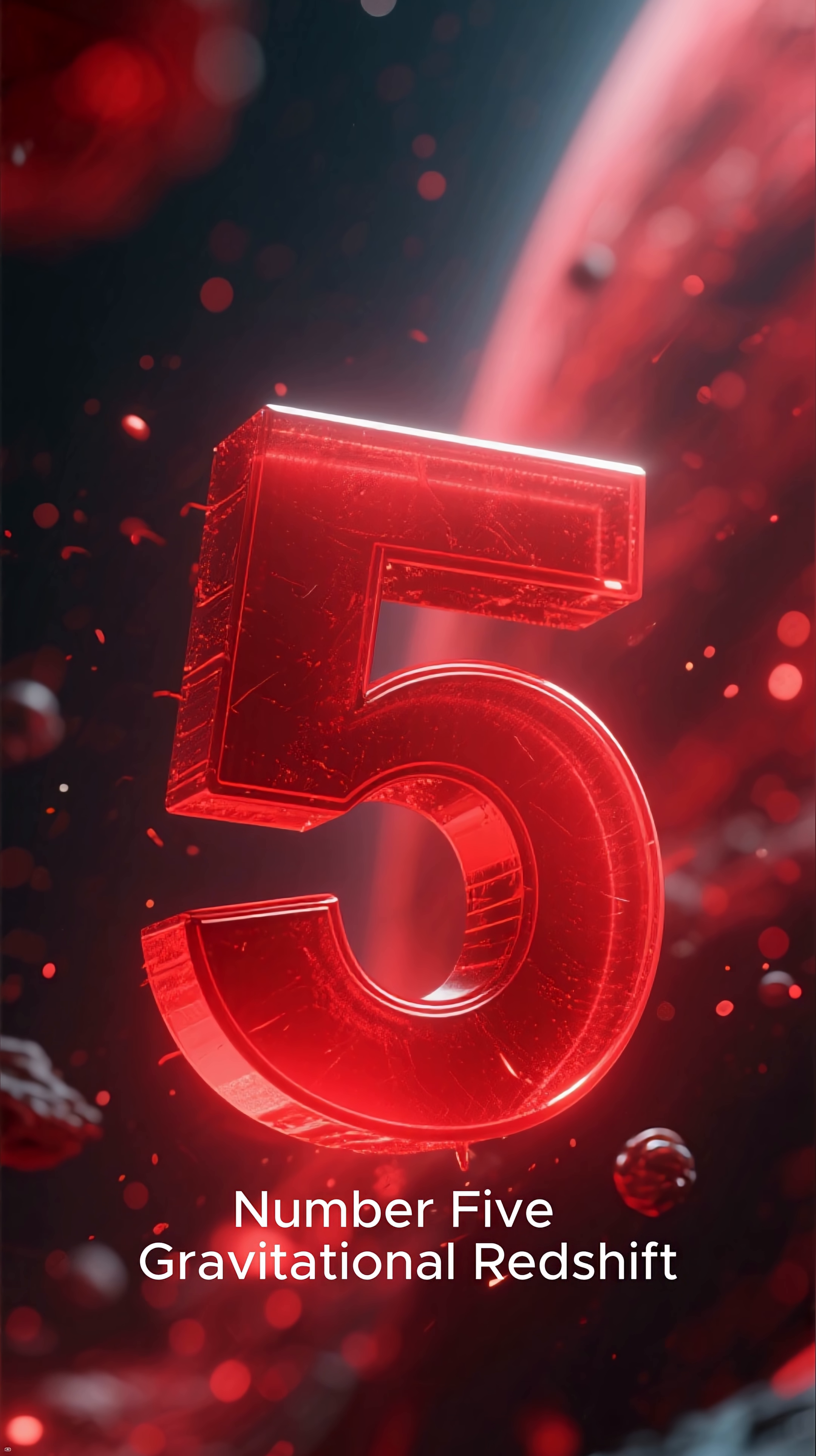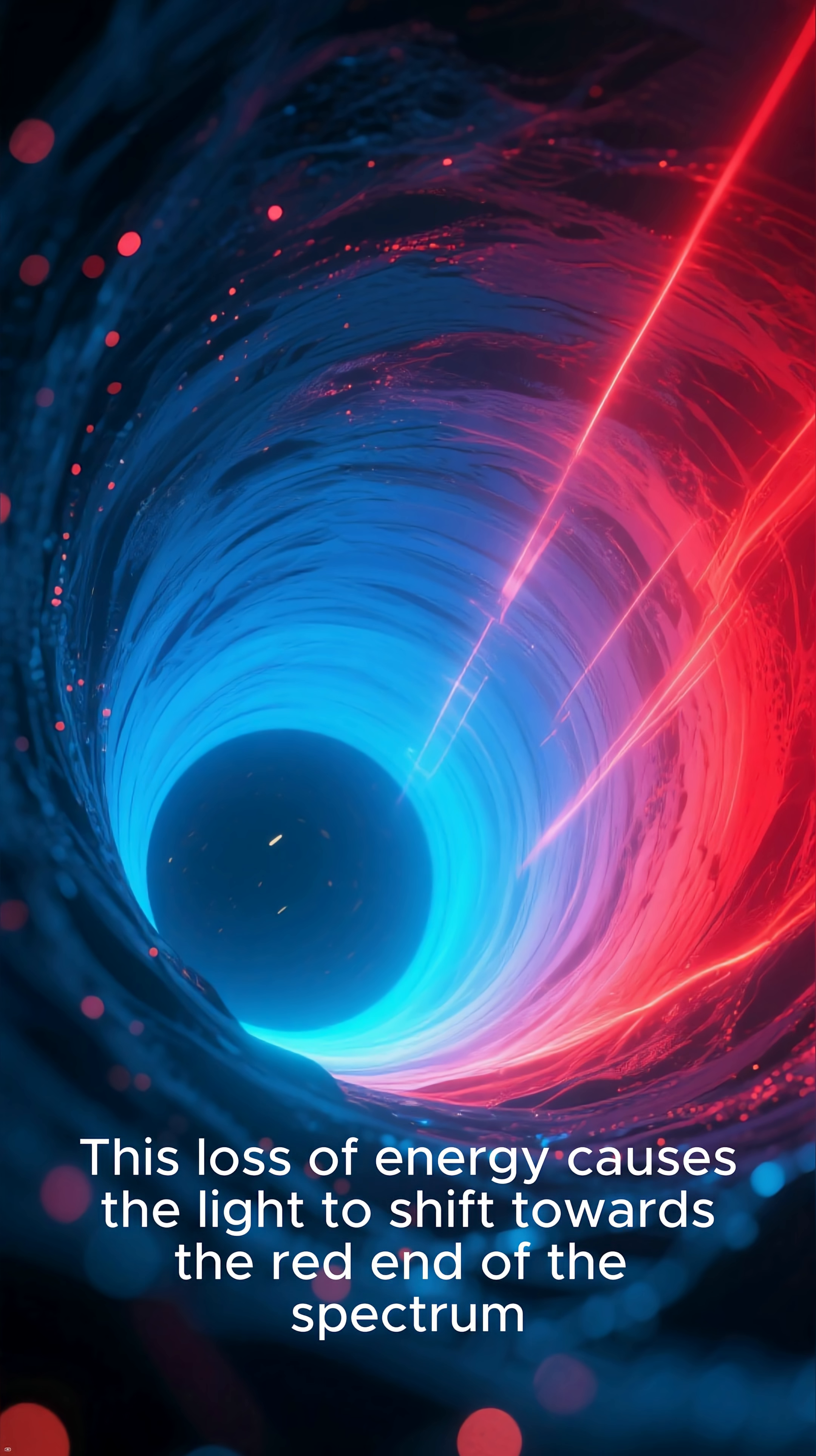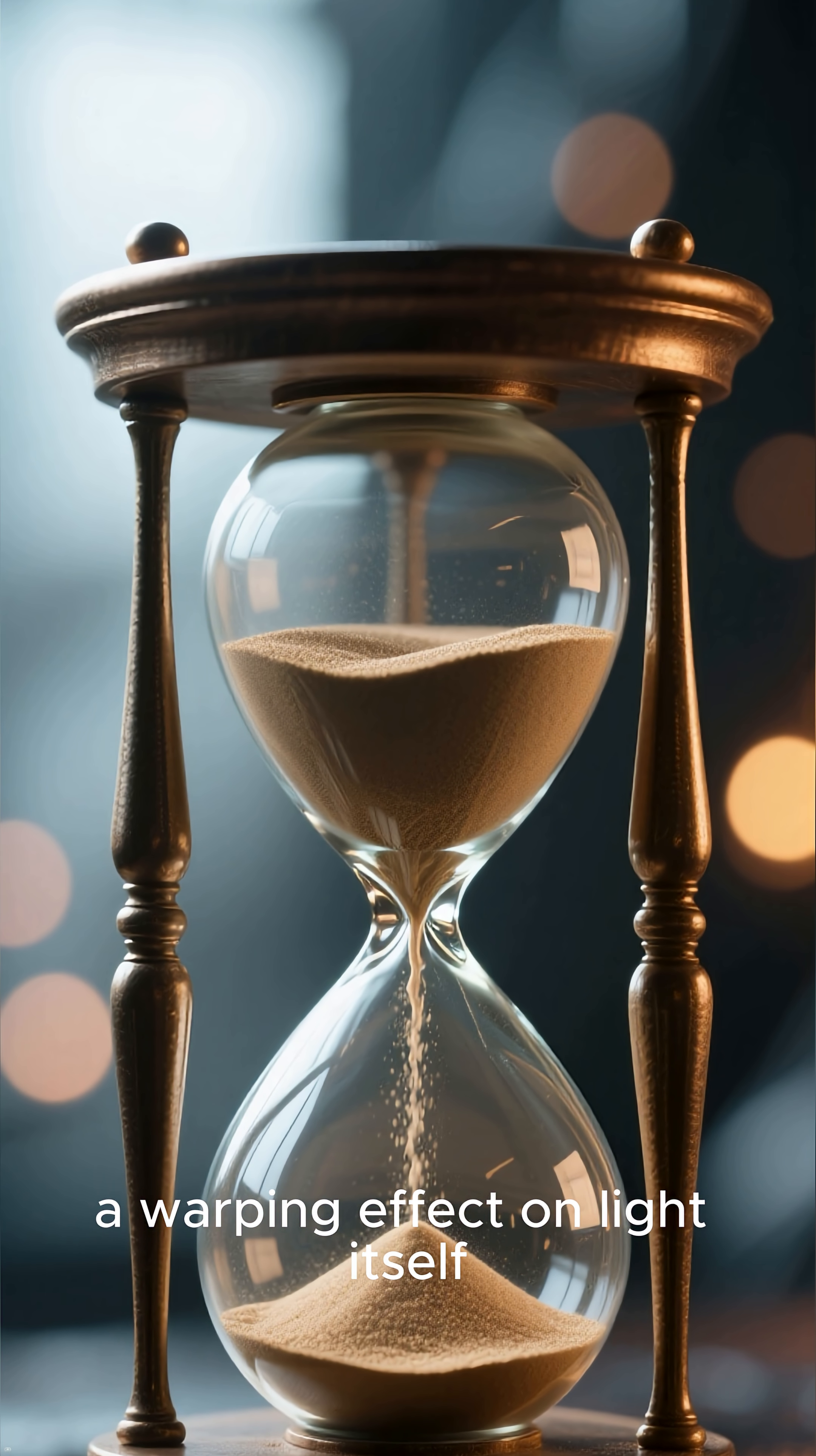Number 5. Gravitational Redshift. Our journey into warped space-time begins with a subtle yet profound effect. In a strong gravitational field, light actually loses energy as it climbs out of the gravity well. This loss of energy causes the light to shift towards the red end of the spectrum, a phenomenon called gravitational redshift. It's a direct consequence of time running slower in stronger gravity, a warping effect on light itself.